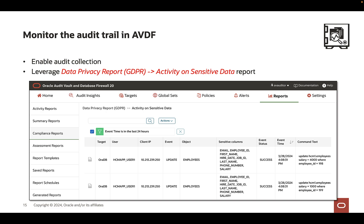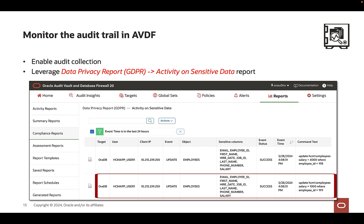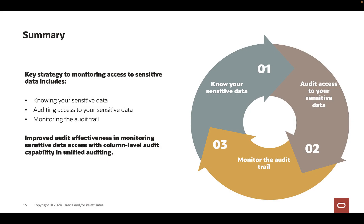Since the audit policies are set to audit precisely on sensitive column access, the events in the reports are very focused on activities that happen on those sensitive data columns. Similarly, in AVDF, once audit collection commences, you can monitor the audit trail to spot any unusual activity on sensitive data access using the activity on sensitive data report belonging to the GDPR category. Many data protection regulations recommend incorporating a continuous monitoring practice for sensitive data access.